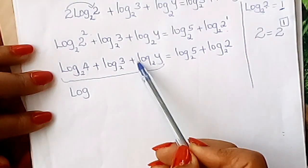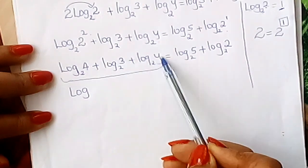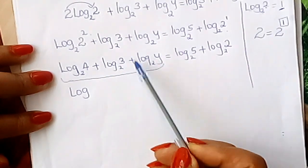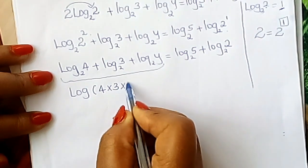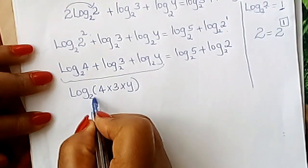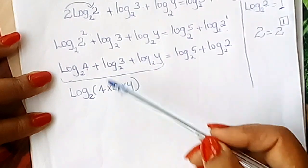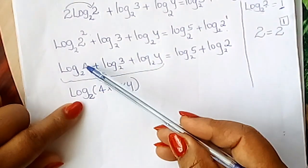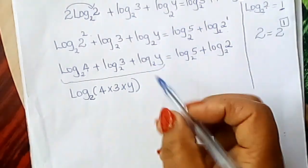If the logs are added, you multiply these numbers. If the logs are added, you multiply the numbers. So we write 4 × 3 × y to base 2, according to the first rule of logarithms. If logs are added, you multiply these numbers.